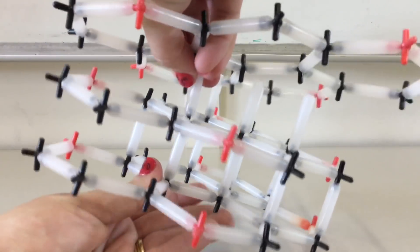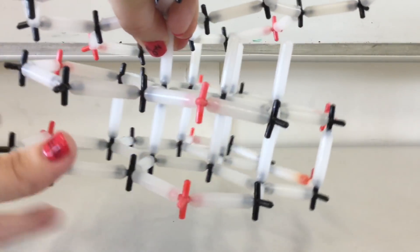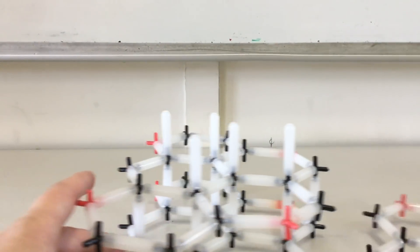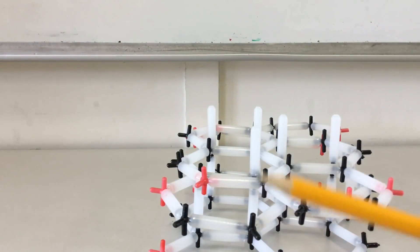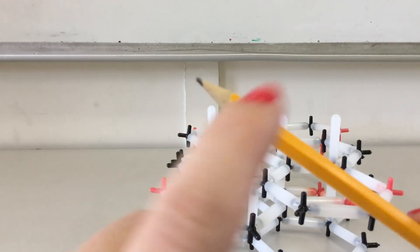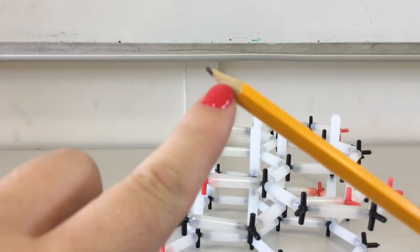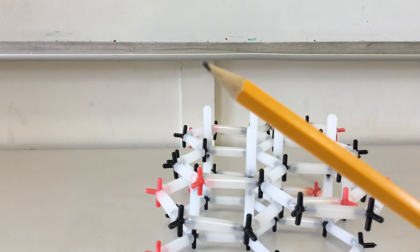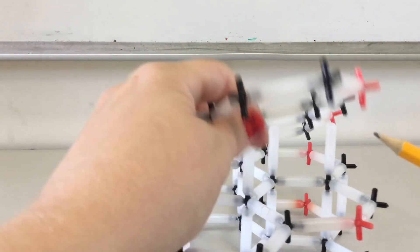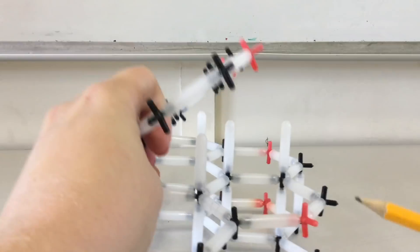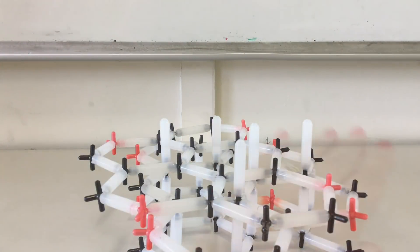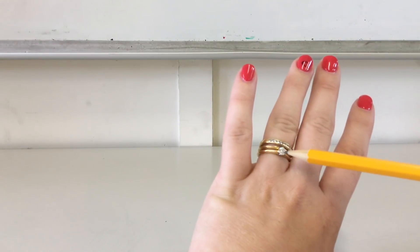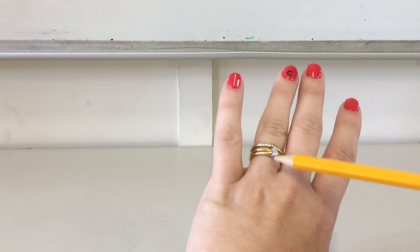Each sheet can slide over the others, and there are delocalized electrons in between each layer, which means graphite can conduct electricity and is a good lubricant. That's the same graphite found in your so-called lead pencil — it's not lead, and never has been. It's made of carbon and is an element.